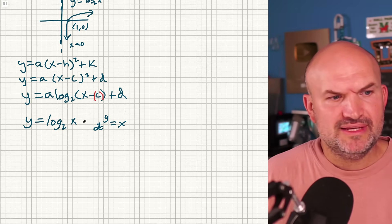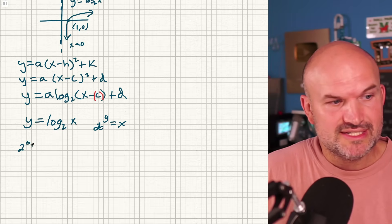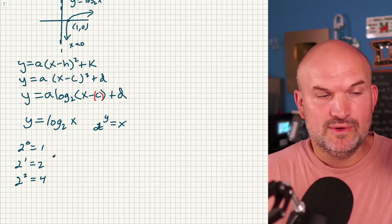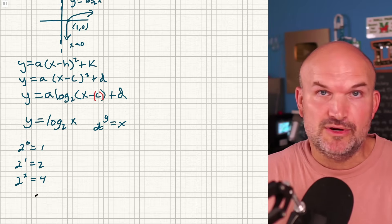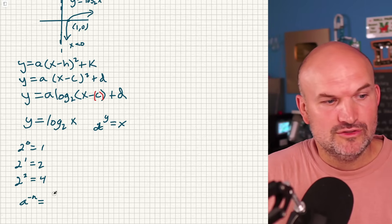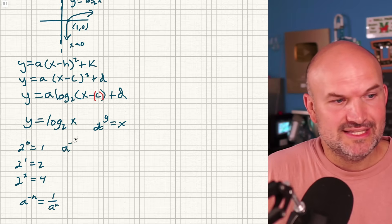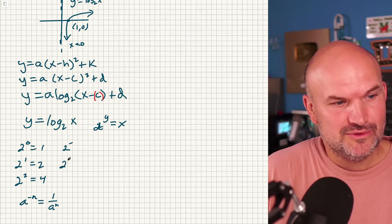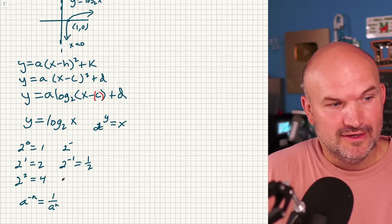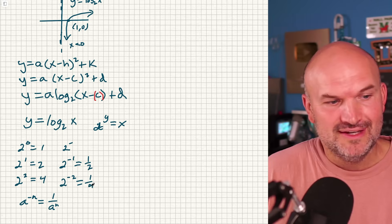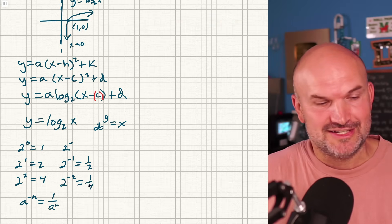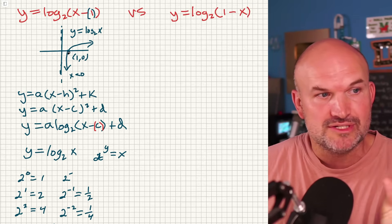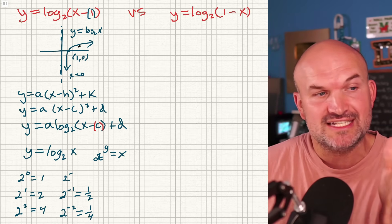Let's look at variations of 2 raised to certain numbers: 2 to the 0 equals 1, 2 to the 1 equals 2, 2 to the 2 equals 4. For negatives, remembering that a to the negative n equals 1 over a to the n: 2 to the negative 1 equals positive one half, and 2 to the negative 2 equals positive one fourth. The domain of this parent function is all positive numbers — all positive values are the x-values that make up that graph.